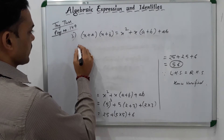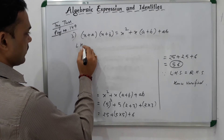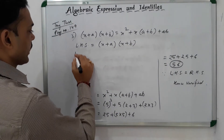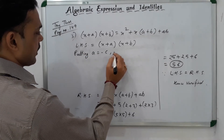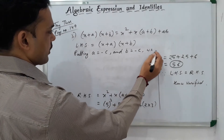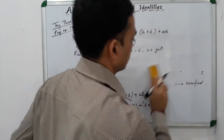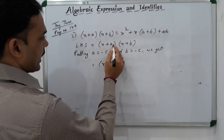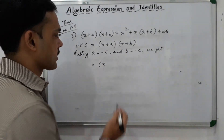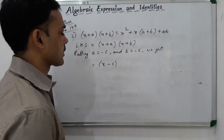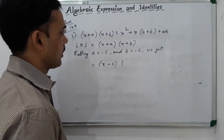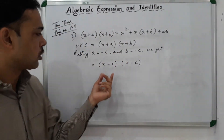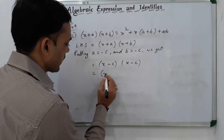Let us take LHS. LHS is (x + a)(x + b). Putting A and B equal to minus C: at place of A we write minus C, so plus minus C becomes (x − c), and similarly at place of B we write minus C, giving (x − c). So LHS becomes (x − c)(x − c), which can be written as (x − c)².